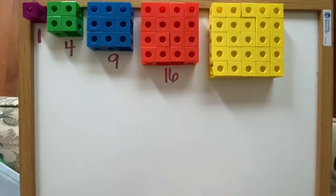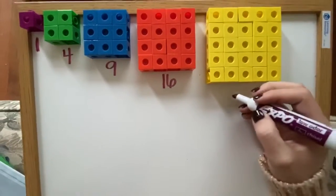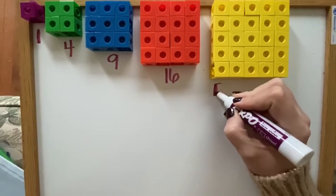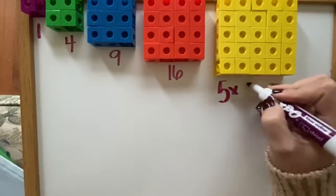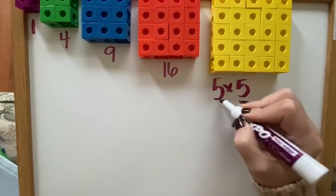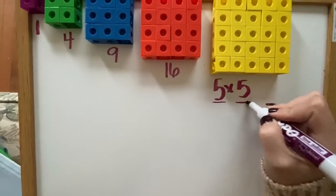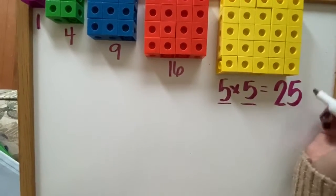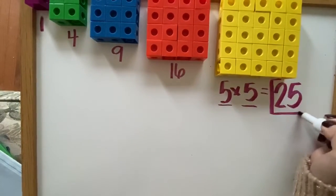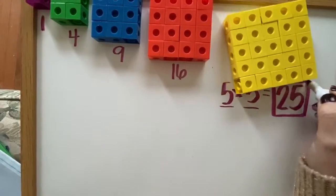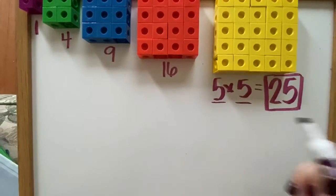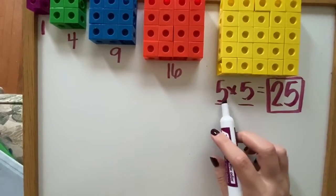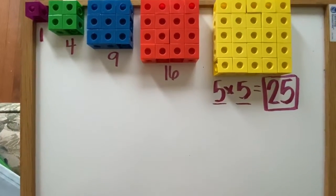25. So, the squared number, which is the product of multiplying two factors of the same, 5 times 5 equals 25. This is a square number. It is the product of two identical factors. That means two factors that are the same.